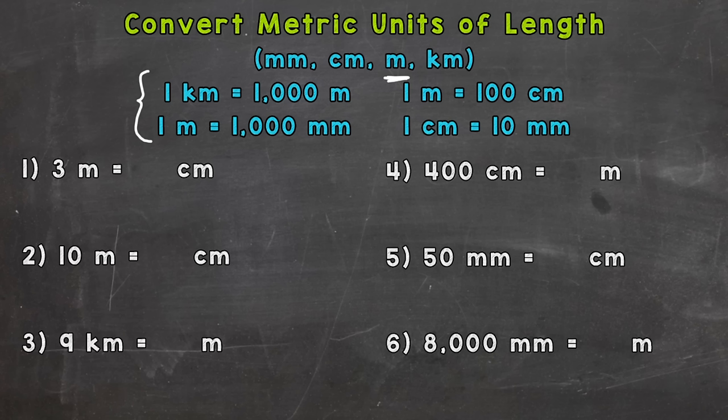On most rulers, centimeters will be marked on the metric portion of that ruler. A meter is a little over a yard, so a meter stick is a little longer than a yard. And a kilometer is a little over a half mile, so kilometers are used to measure long distances.